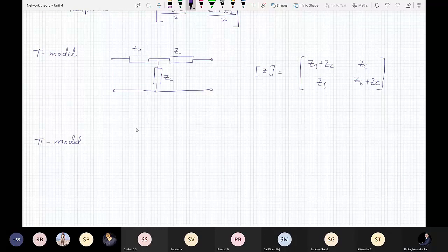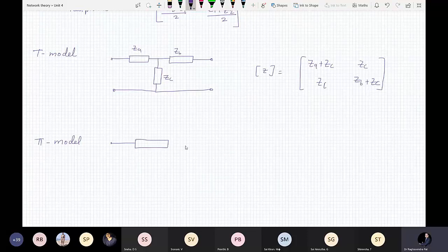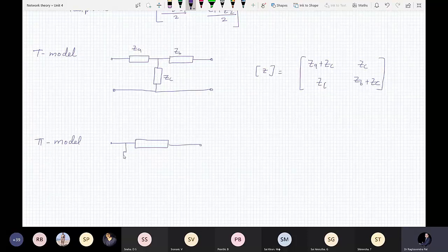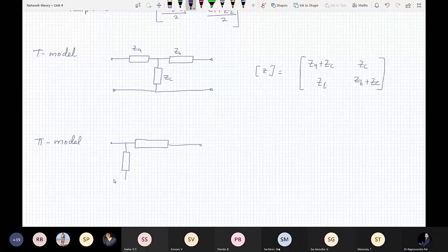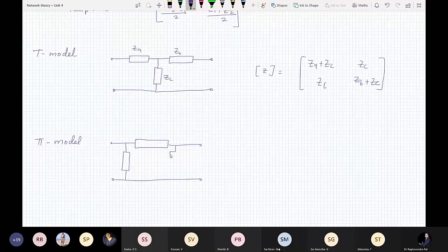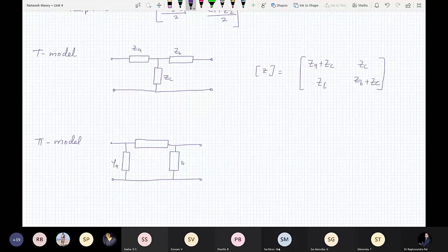Another network is a Pi-model and why it is called Pi-model because it looks like Pi-model. So it is Y - so YA, YB and YC.